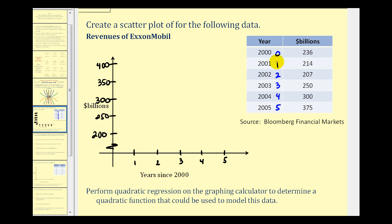And now we'll go ahead and plot these six points. The first point is zero, 236, one, 214, two, 207, three, 250, four, 300, and five, 375.